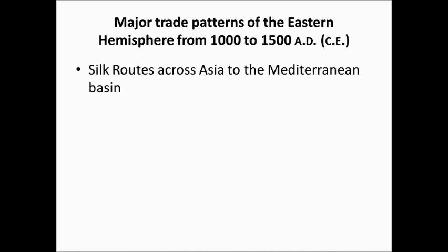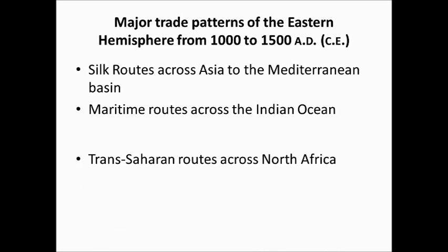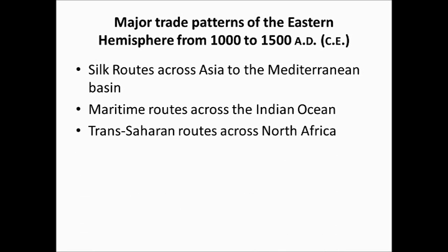The Silk Road is probably the most famous trade route, going across Asia to the Mediterranean basin. It wasn't just a land route — we're also talking about sea routes and everything else that happened in this period. There were many maritime routes across the Indian Ocean, and I'm going to show you pictures of all these routes.